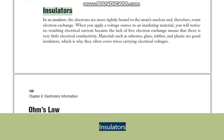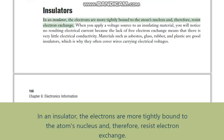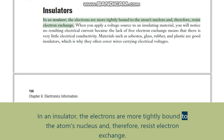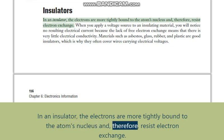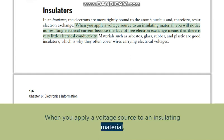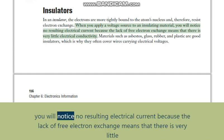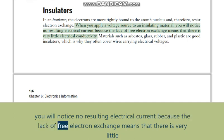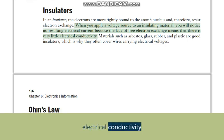Insulators. In an insulator, the electrons are more tightly bound to the atom's nucleus and, therefore, resist electron exchange. When you apply a voltage source to an insulating material, you will notice no resulting electrical current, because the lack of free electron exchange means that there is very little electrical conductivity.